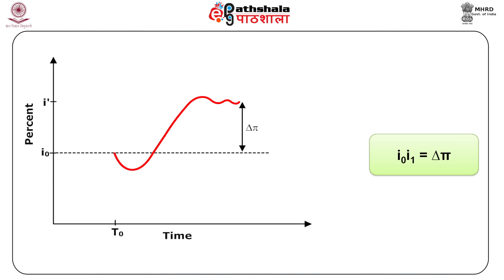The following diagram shows one such possible path. As you can see in Figure 1, the path of interest rate: we measure the nominal rate of interest on the vertical axis and time on the horizontal axis. The figure shows that at time t0 the rate of interest falls initially, and as output increases the inflation rate also increases, leading to a rise in the rate of interest. The rise in the rate of interest is exactly equal to the rate of change in inflation, that is I0 to I1 equals delta pi.